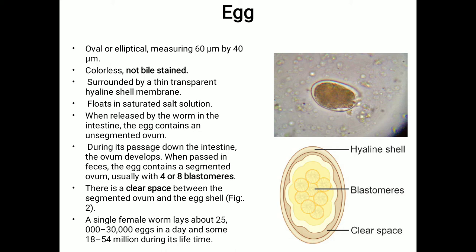The egg of the hookworm, Ancylostoma duodenale, is oval or elliptical, measuring 60 micrometers by 40 micrometers. It is colorless and not bile-stained. It is surrounded by a thin, transparent hyaline shell membrane, and the eggs float in saturated salt solution if the flotation method is performed.